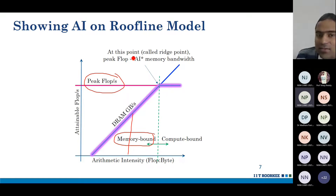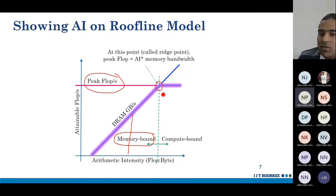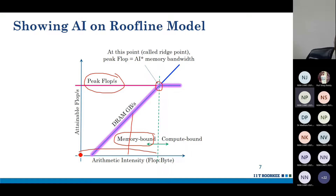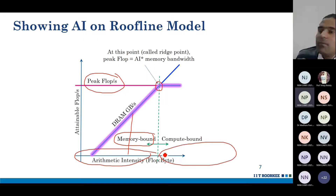The point where the diagonal line and the horizontal peak FLOPS line intersect is called the ridge point. At this point, AI × memory bandwidth = peak FLOPS. Any application with an AI value below the ridge point is memory bandwidth bound; any application with an AI value above it is compute bound.